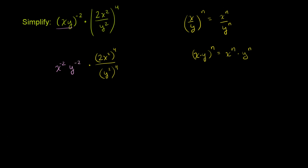Now what can we simplify? Well, we can use this property again right over here. We have 2x squared raised to the fourth power, so that's going to be the same thing as 2 to the fourth power times x squared to the fourth power.